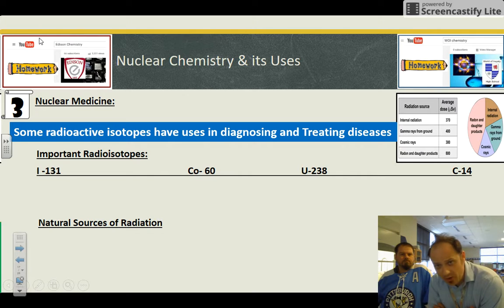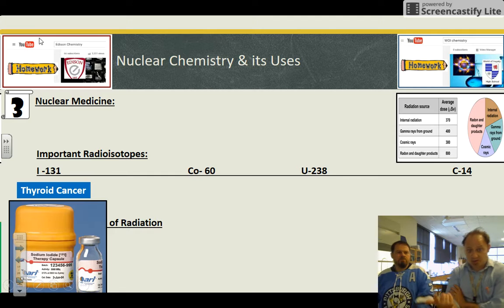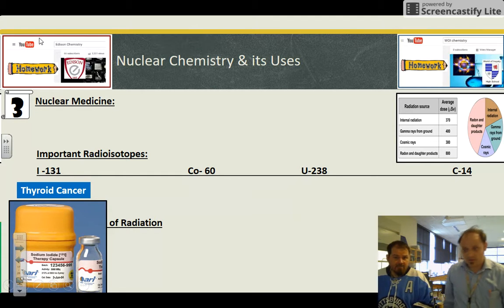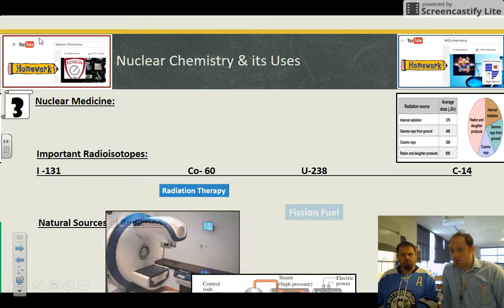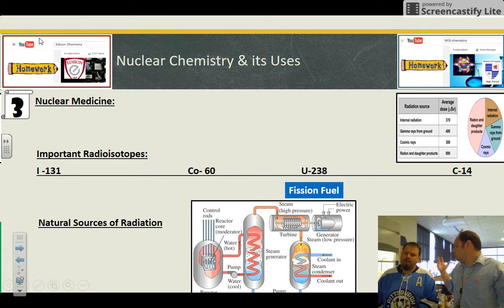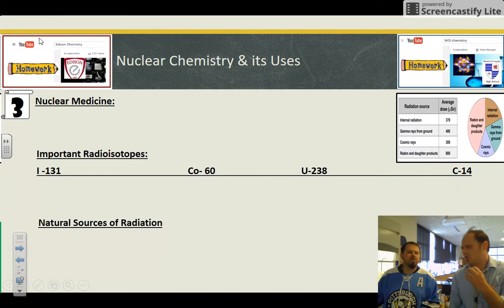Nuclear medicine is really simple. Some radioactive isotopes are used to treat and diagnose cancer. So thyroid is iodine. You need to know that. Cobalt 60 is radiation therapy. Uranium fuel. And carbon 14 for carbon dating, tying out to bones.